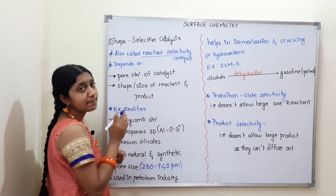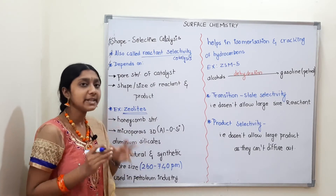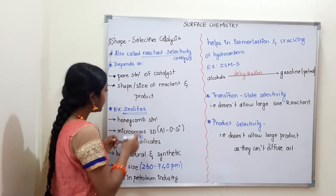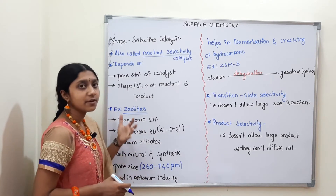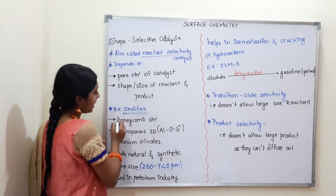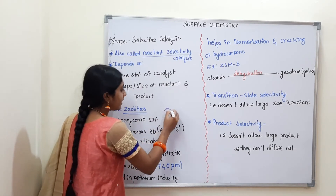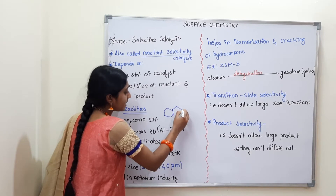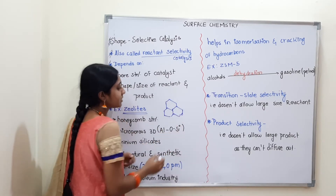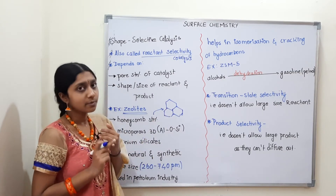The best example of shape selective catalyst is zeolite. Zeolite is the best example of a shape selective catalyst. These are its different properties and characteristics. The first one is honeycomb structure — zeolites have a honeycomb structure.